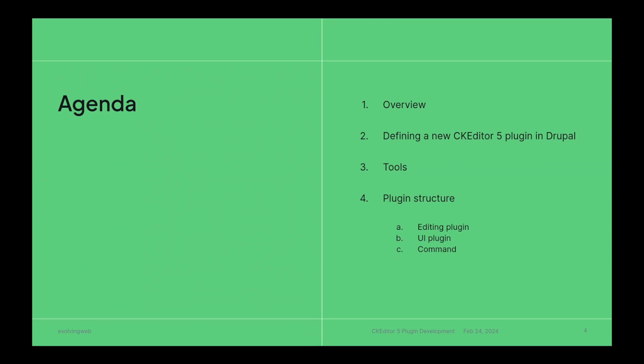I want to make a little remark: I call them plugins because they instantiate the plugin class — editing and UI — but think about them as parts of our plugin. Our plugin is called DemoLink.